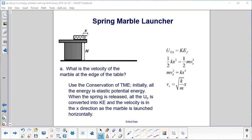When the spring is released, all of that energy is converted into kinetic energy, and the velocity is in the x direction only as it is fired horizontally.